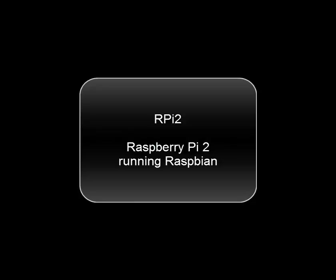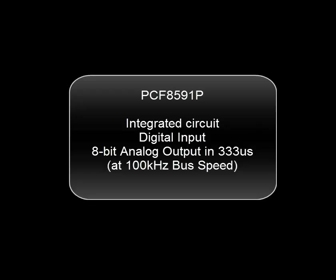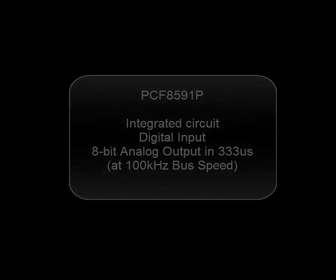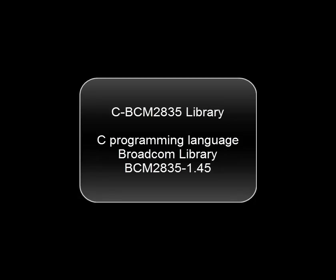Inter-Integrated Circuit with a Raspberry Pi 2 running Raspbian. The integrated circuit provides digital input and 8-bit analog output in 333 microseconds at 100 kHz bus speed. The programming language is C, using the Broadcom BCM2835 library.